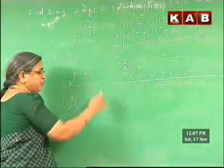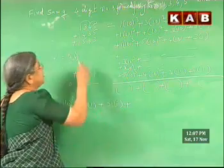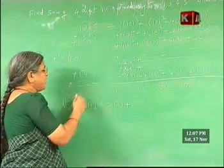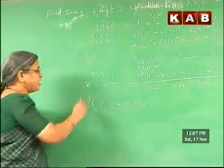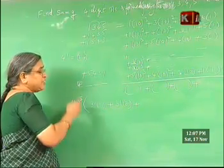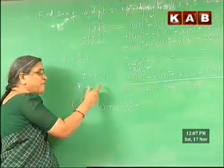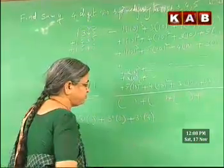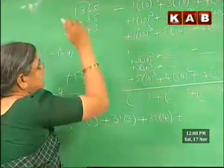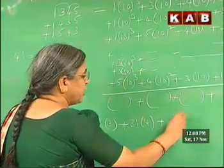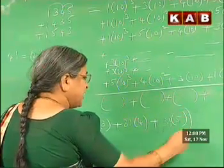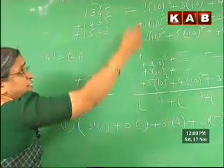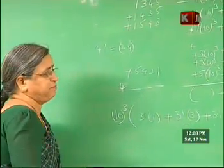In the same way, 4 into 10 cube — if 4 is written here, the remaining 3 can be filled in 3 factorial ways. That means 3 factorial times I am writing 4 in the thousands place. So 3 factorial into 4, plus one more number is 5 — that also can be written in this way. So this is the sum of all the numbers which are in the thousands place: 3 factorial into (1 + 3 + 4 + 5) into 10 cube.